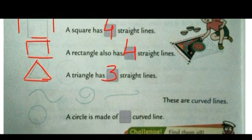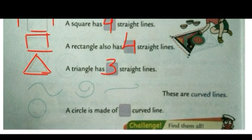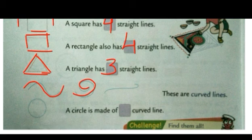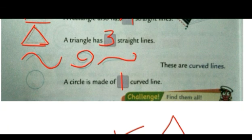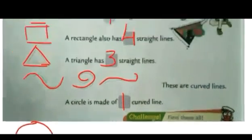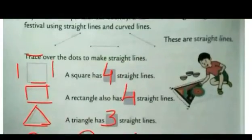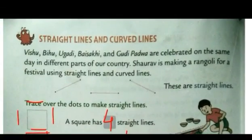Now see the next figures given here. These all are curved lines. A circle is made of dash curved line. A circle is made up of only one curved line — it is enough to make a circle like this. So now you understand what are straight lines and curved lines.